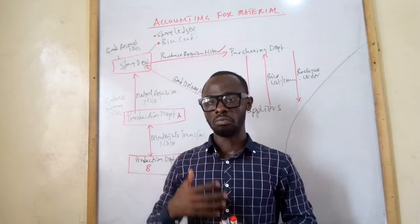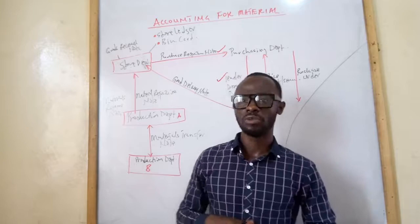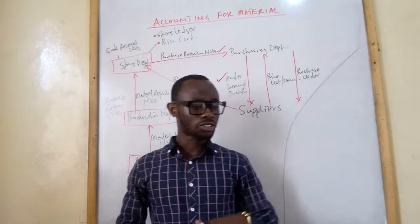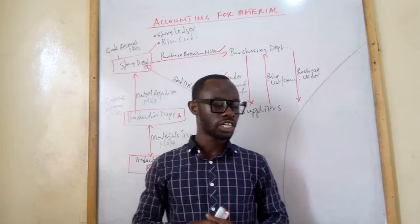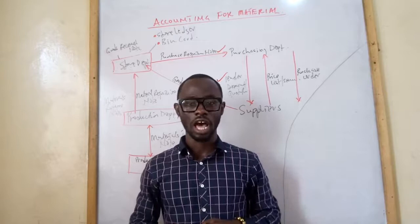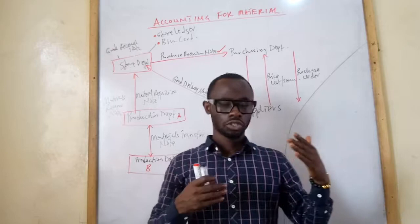Periodic stock taking is the counting and valuing of physical stock at the end of an accounting period, usually annually. The disadvantages are that it may lead to poor record keeping and omissions, there may be theft and pilferages, there may be damages, deterioration and evaporation that would not have been caught with continuous stock taking, and there may be errors in the stock accounts.